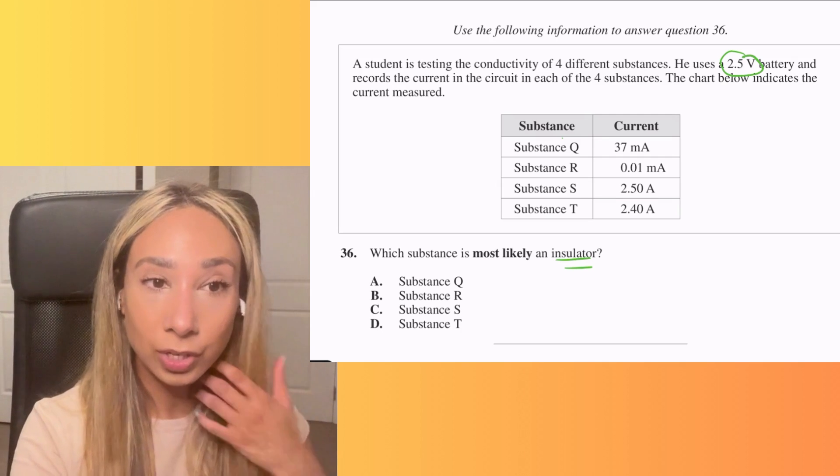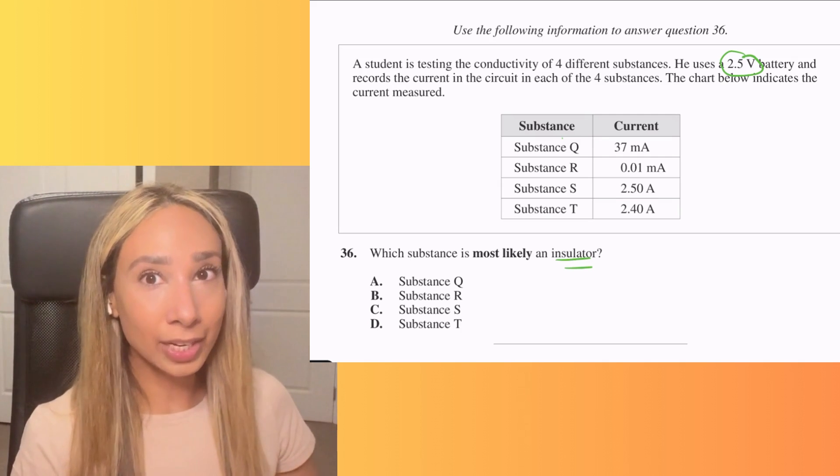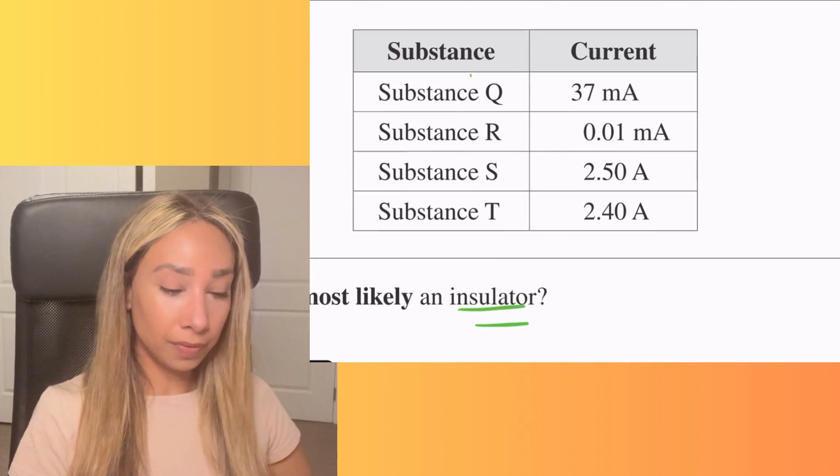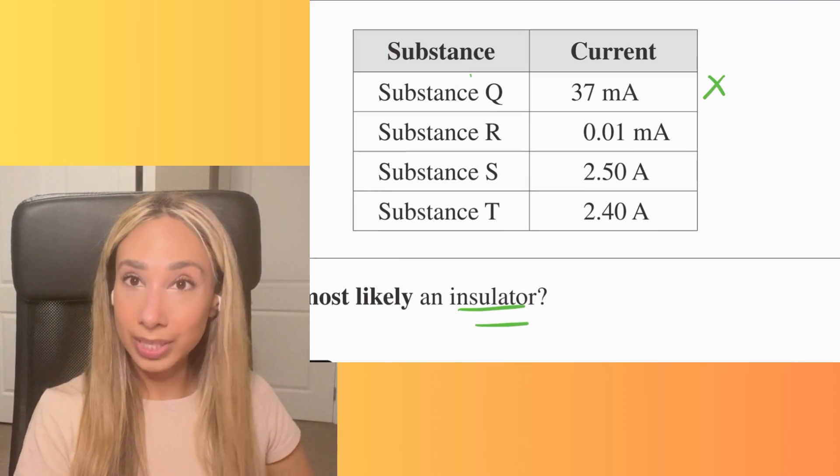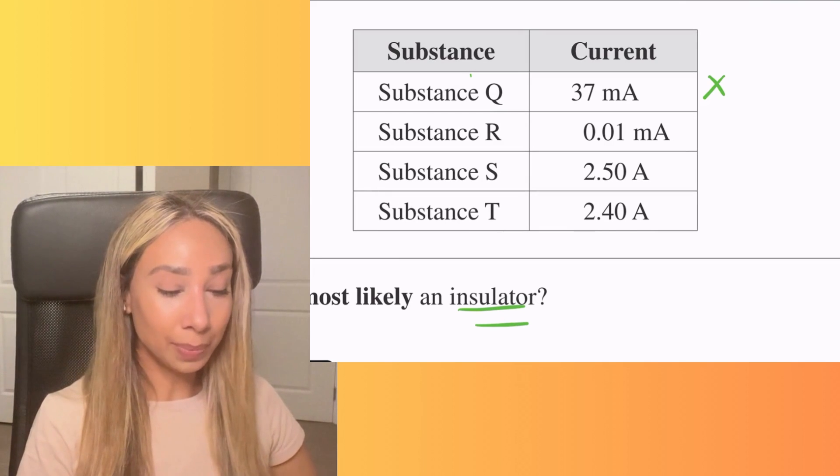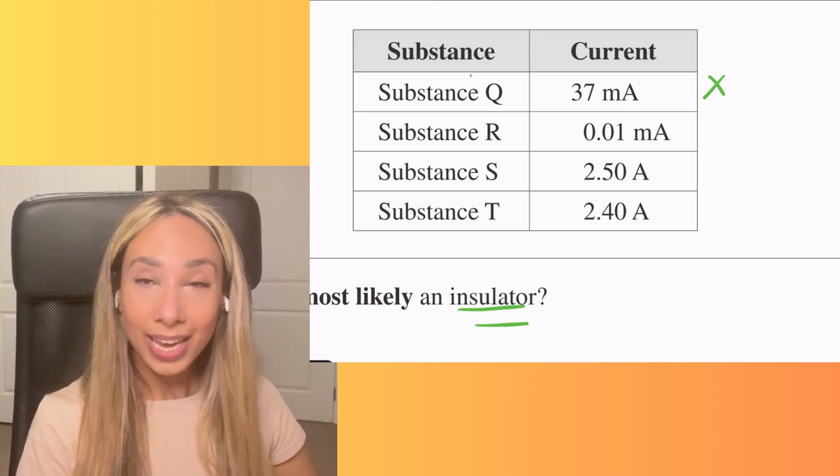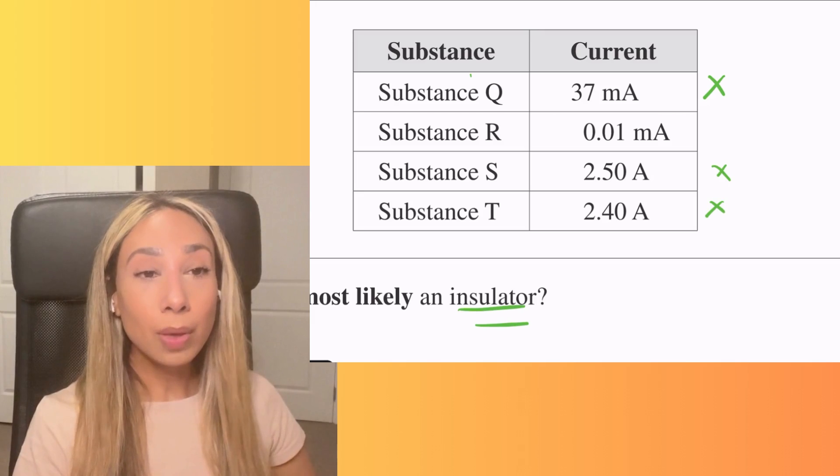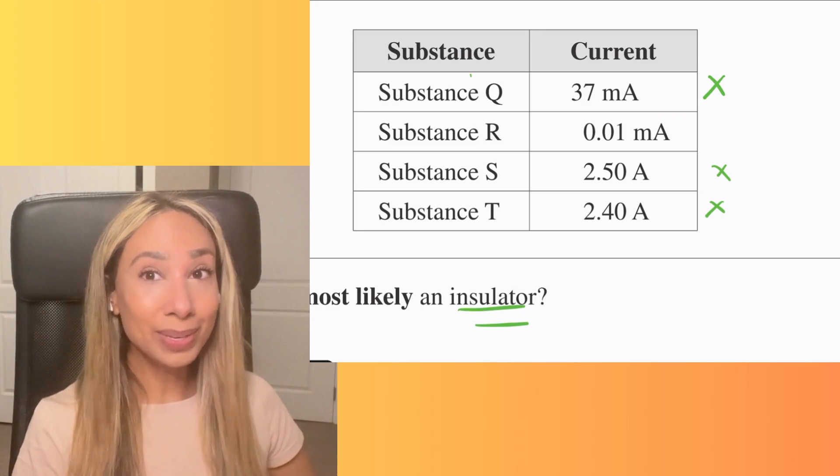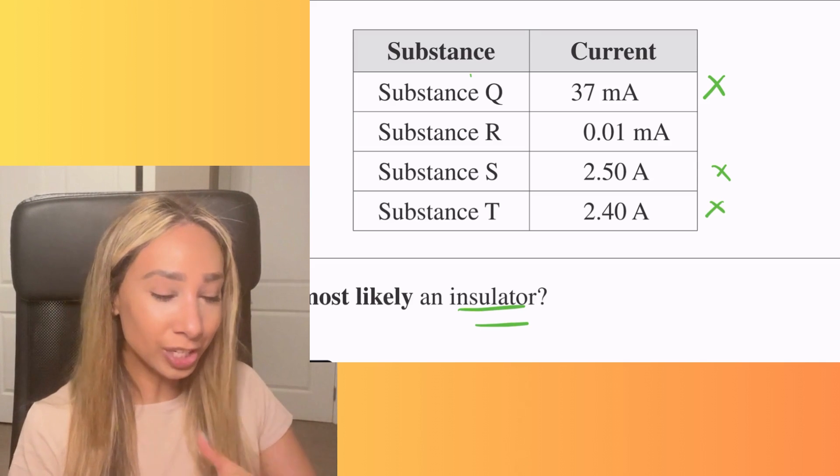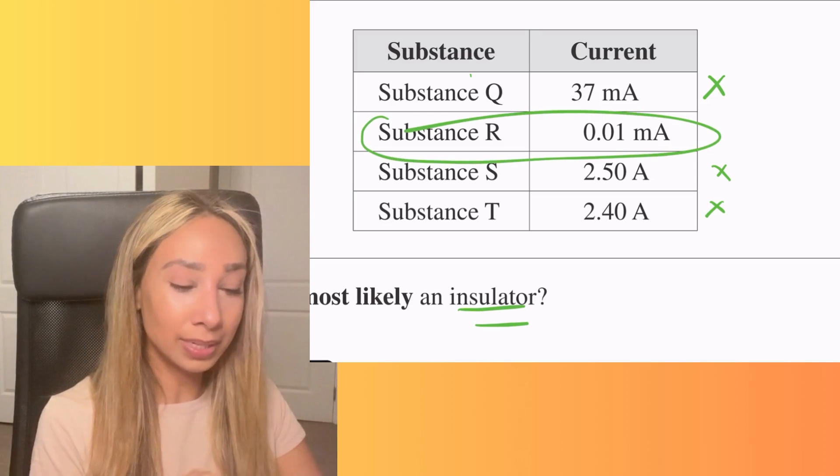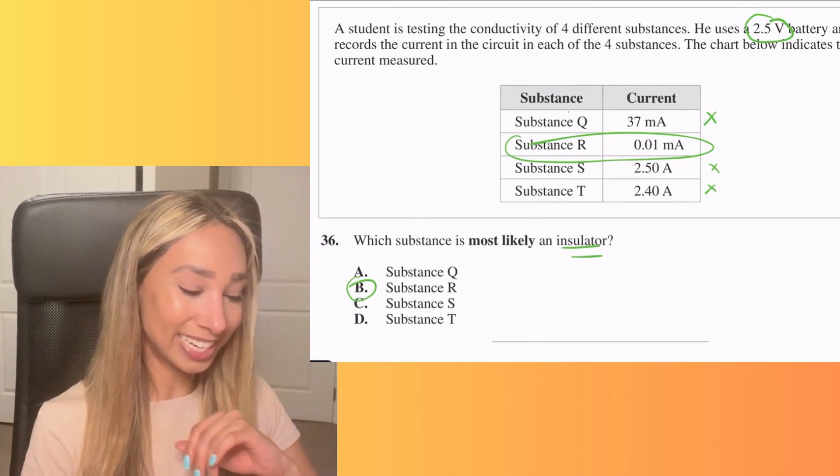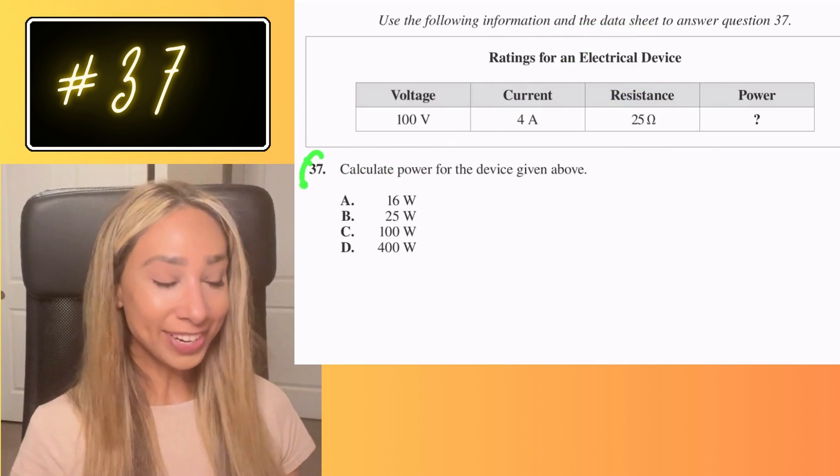So we need to first think about what an insulator is. So an insulator is something that's not going to be able to conduct electricity really well. We use it on the outside of wires. So your charger for your phone will have an insulator on it. They use it for certain types of gloves for anyone that's handling specific types of current. So we need an insulator. We need something that's not going to be able to conduct electricity or at least conduct electricity really well. So that means we can't think of Q as an option because that conducts electricity really well. Same thing with substance S and T, even though they're measured in different units, they're still conducting quite a bit of electricity. The best one that is going to be used as an insulator is one that's conducting the least amount of energy, which in this case is going to be substance R making our answer B.